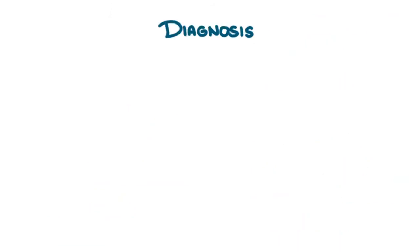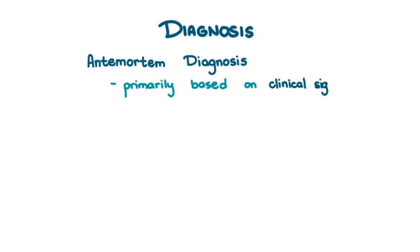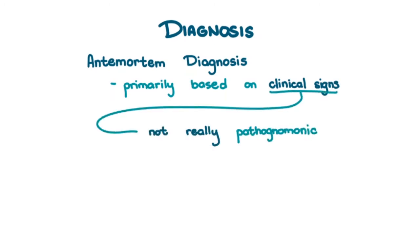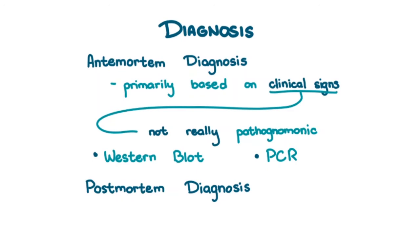Diagnosis. Antemortem diagnosis is primarily based on clinical signs, and even then, they're not really pathognomonic. Western blot analysis of serum and/or cerebrospinal fluid may be done, as well as polymerase chain reaction. Postmortem diagnosis is confirmed by histopathologic demonstration of Sarcosystis neurona in the central nervous system lesions.